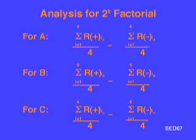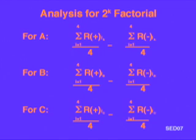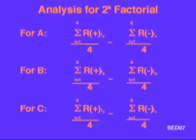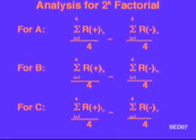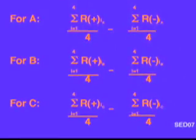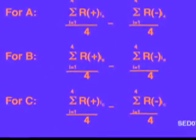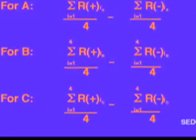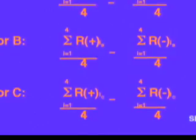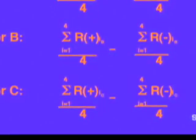We do the same thing for each factor. We add up the responses at the high level of the factor and divide by four to give the average response at that level. Take the difference and we have the average effect of the change between the high and low. But can we really do this?